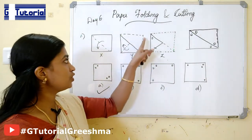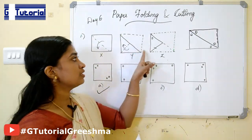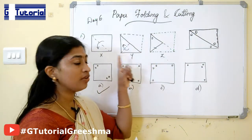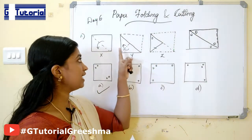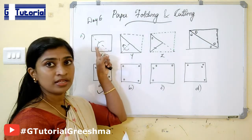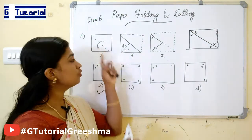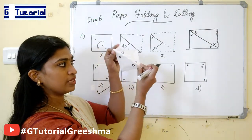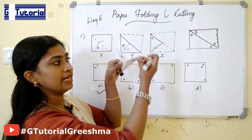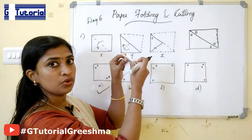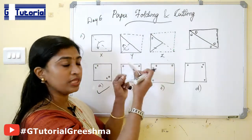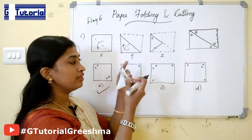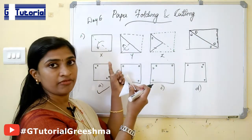The dotted line shows the reference line of folding and the direction of folding is shown by the arrow. The paper is folded first like this, then like this, then a cut is made. You have to follow the reverse manner of unfolding to find the final figure.